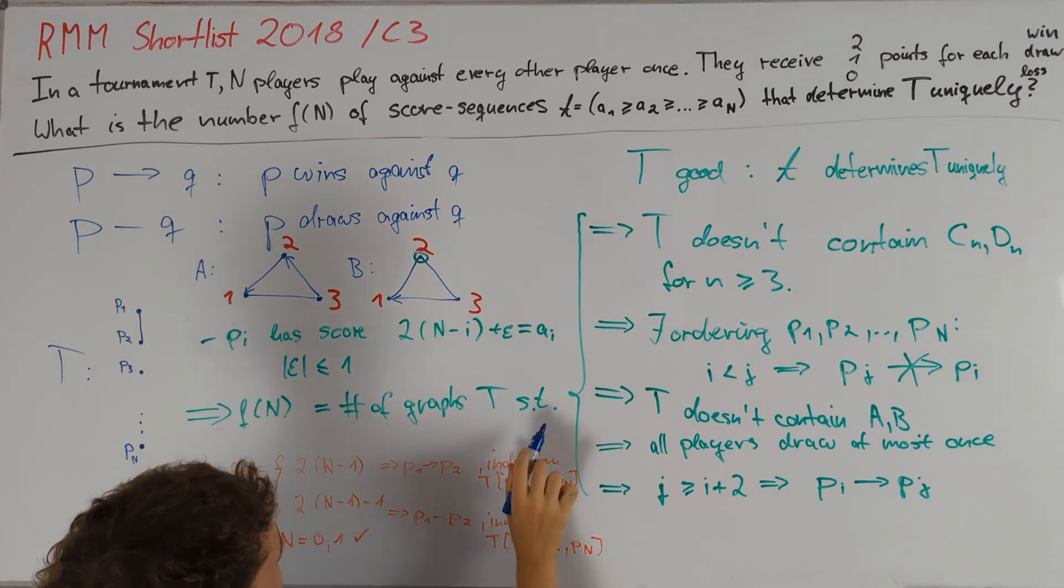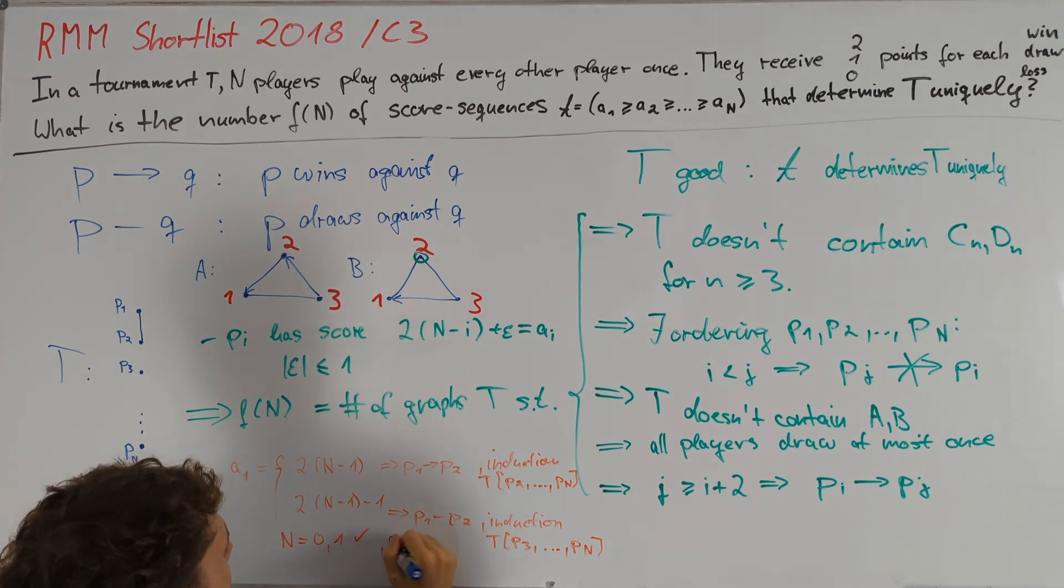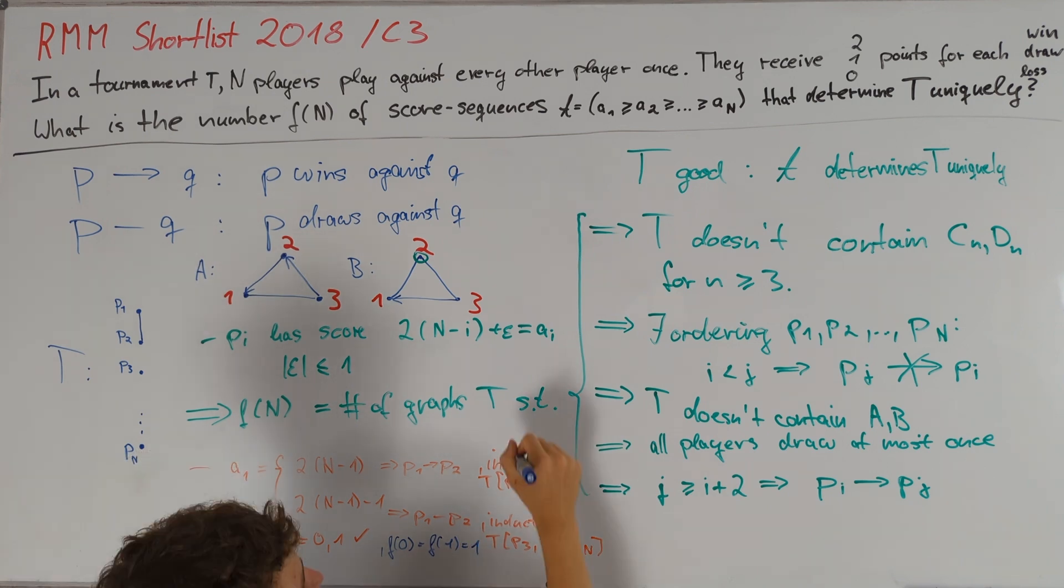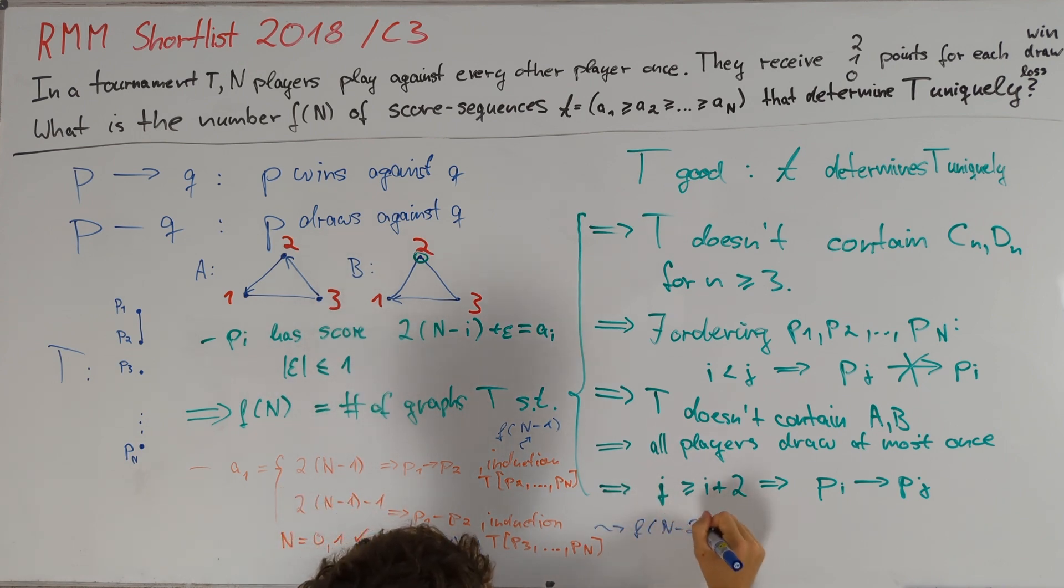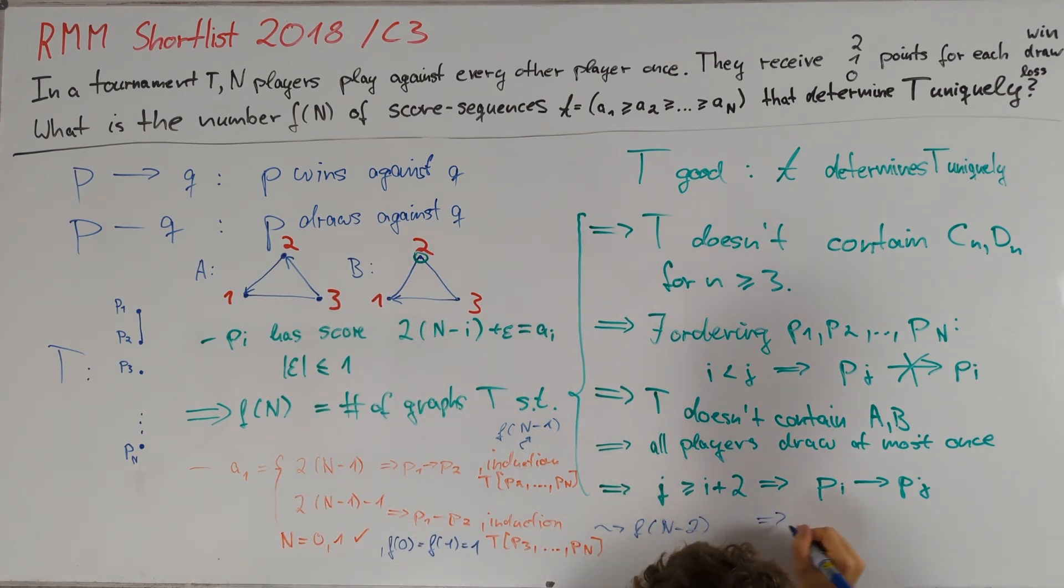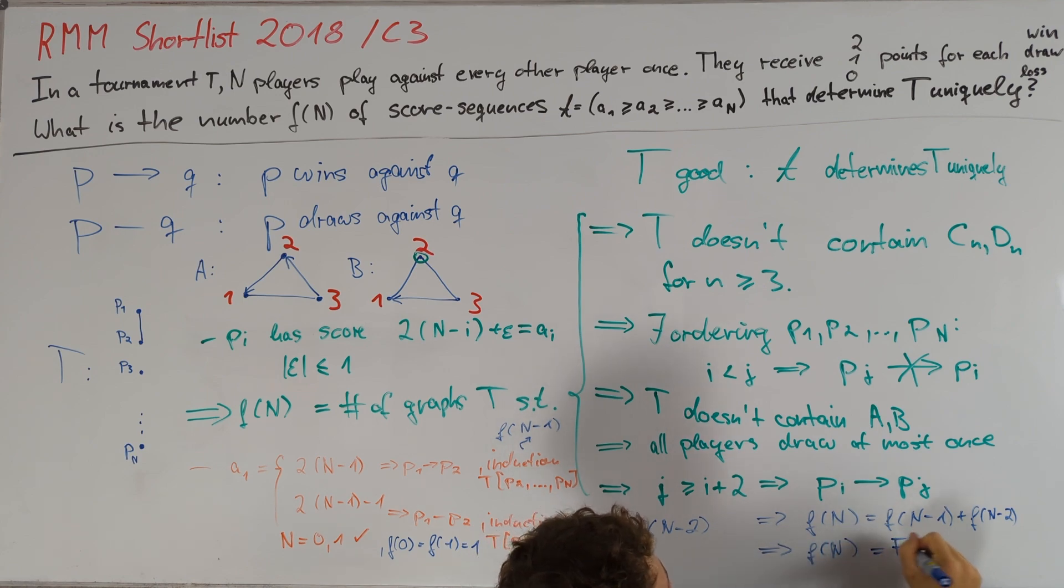It remains to count this number of graphs T, which can be done by the same induction. Namely, we have f(0) equals f(1) is equal to 1, and our two cases give us an f(N-1) and f(N-2) respectively, which implies that f(N) is equal to f(N-1) plus f(N-2). Combining this with our two initial values for f, we can conclude that f(N) is just the Nth Fibonacci number.